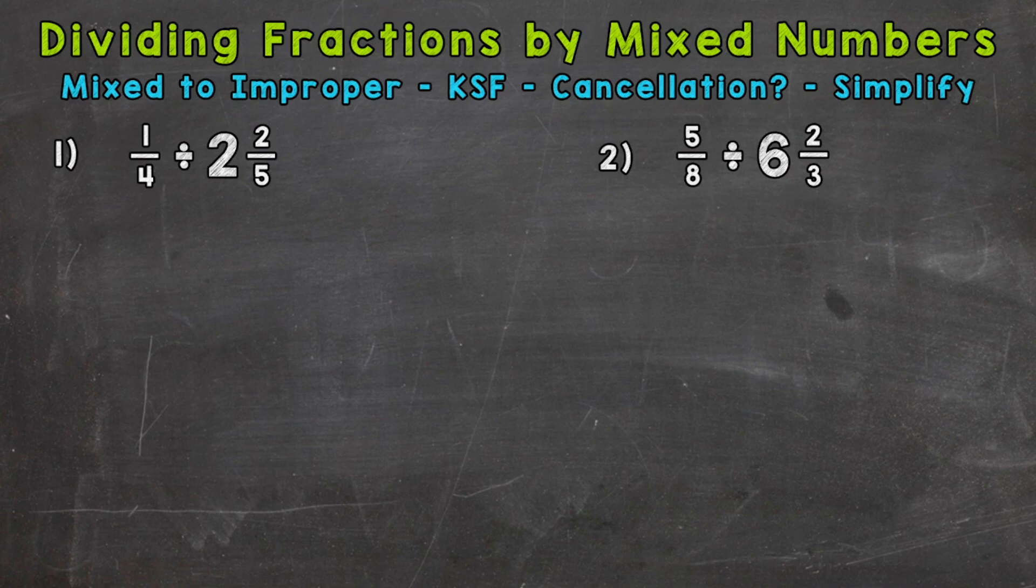So we'll rewrite one-fourth, already in fractional form here, divided by, let's change two and two-fifths to an improper fraction. We do that by starting at the bottom and working our way up. We multiply and then add. Five times two is ten, plus two is twelve. Keep our denominator of five the same. So now we have a numerator of twelve and a denominator of five, and we're able to continue on.